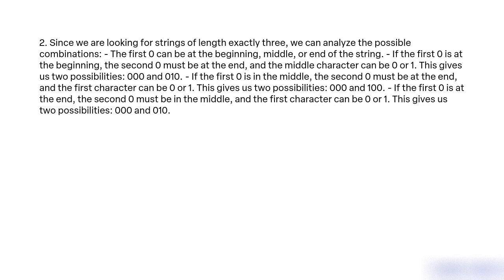Since we are looking for strings of length exactly 3, we can analyse the possible combinations. The first zero can be at the beginning, middle, or end of the string. If the first zero is at the beginning, the second zero must be at the end and the middle character can be 0 or 1. This gives us two possibilities: 000 and 010.